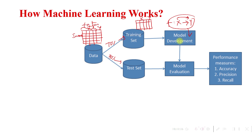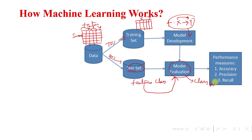For model evaluation, the test data is split into features and class labels. We provide only the features to the model, and the model evaluates the corresponding predicted class label. By comparing the actual class labels with the predicted class labels, we can find the performance of our model using parameters such as accuracy, precision, and recall.